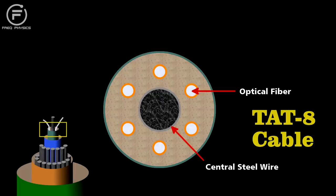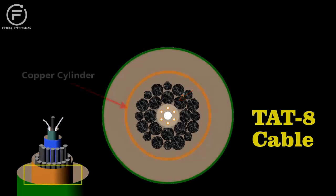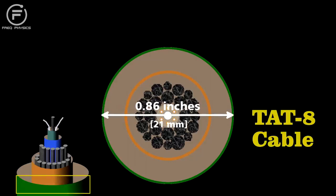They embedded this in an elastomer to cushion the fibers, surround it with steel strands, and then sealed it inside a copper cylinder to protect it from water. The final cable was less than an inch in diameter, yet it could handle some 40,000 simultaneous phone calls.